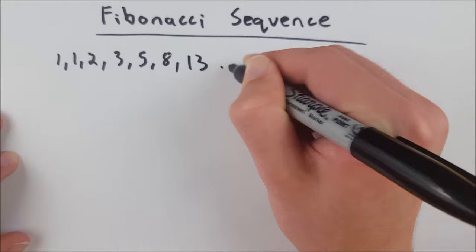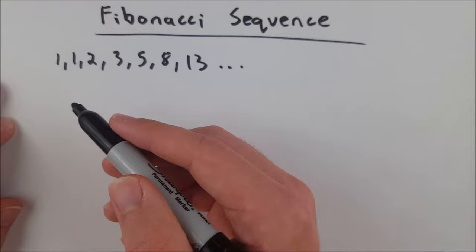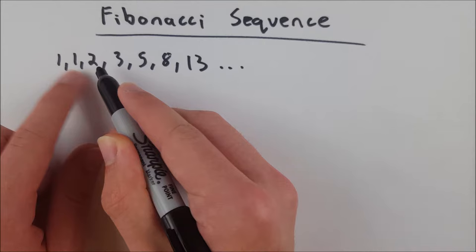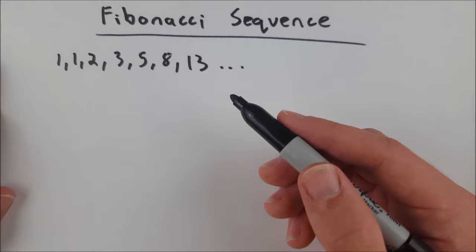Can you tell how we're getting these numbers? Well, the sequence starts with 1 and 1. Every subsequent number is the sum of the previous two numbers. So, we see here 1, 1, and then from then on, to get 2, we add the two previous numbers. 1 plus 1 is 2, and then to get to the next number, 2 plus 1 is 3. To get to the next number, 3 plus 2 is 5, so on and so forth.